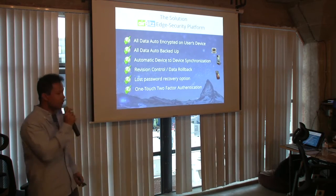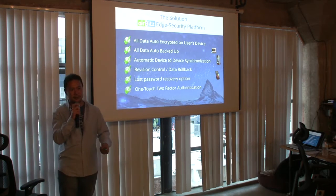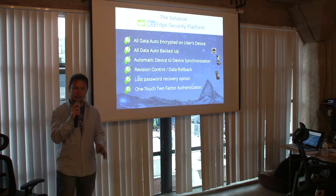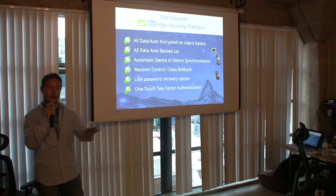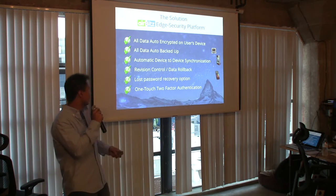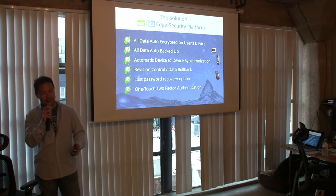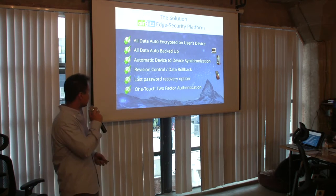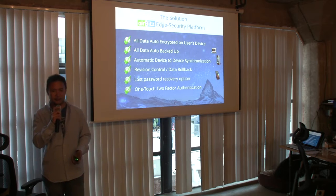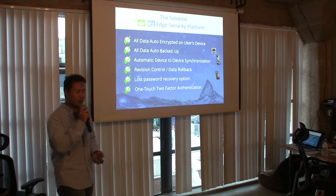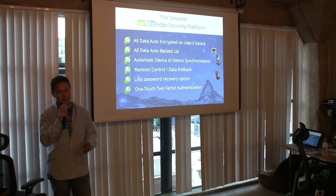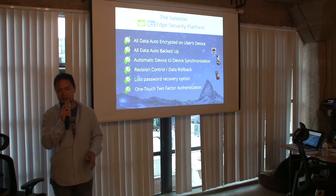We've built a software development kit that allows developers to write data for their application that's automatically encrypted before it even touches the device, automatically backed up onto peer-to-peer distributed servers, automatically synchronized between your different devices. If you authenticate on your phone and then on your tablet, that data gets automatically synchronized between the two. It's automatically revision controlled, so if you inadvertently edit the data and you want to go back a version, you can do that. We have a unique solution for lost password recovery. And we've implemented what we call one-touch two-factor — two-factor authentication or device locking in a way that's nearly invisible to the user.